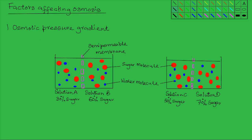Now take for instance these two solutions here — solution A and solution B. Solution A is 30% sugar while solution B is 60% sugar. In terms of solid concentration, solution B has a higher solid concentration than solution A, and for that reason, solution B will develop a higher osmotic pressure compared to solution A.